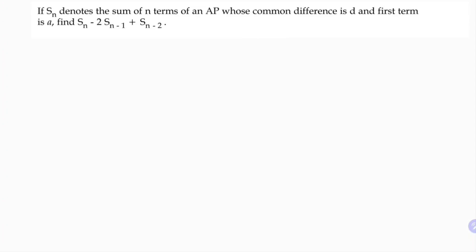If Sn denotes the sum of n terms of an AP whose common difference is D and first term is A, find the value of Sn minus 2 times S(n-1) plus S(n-2).